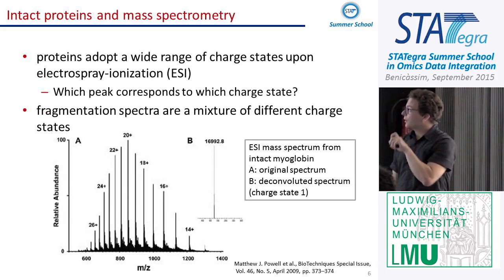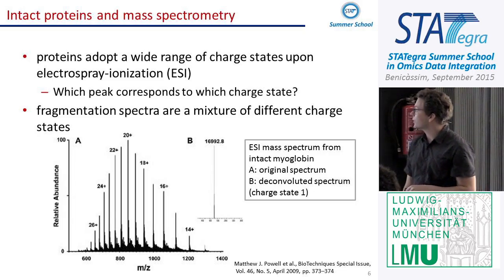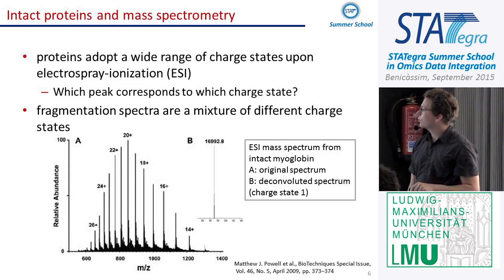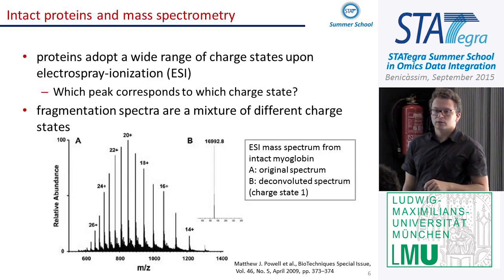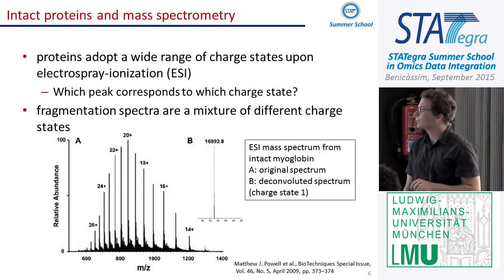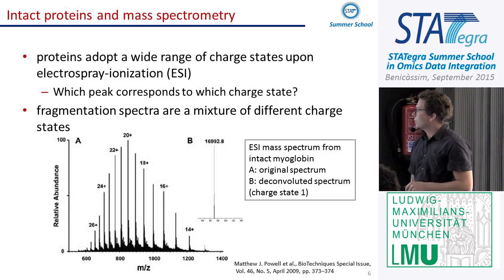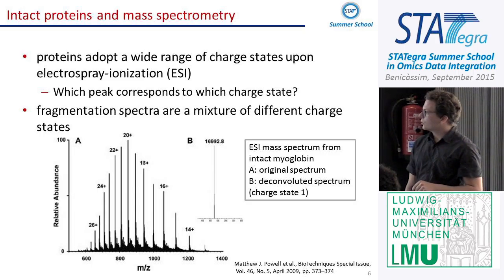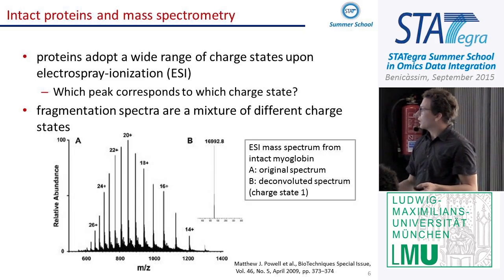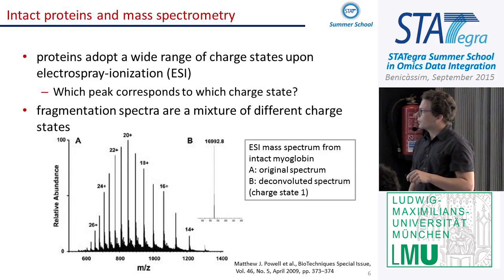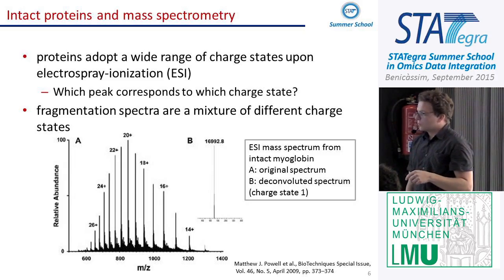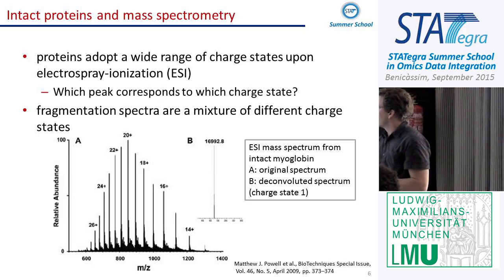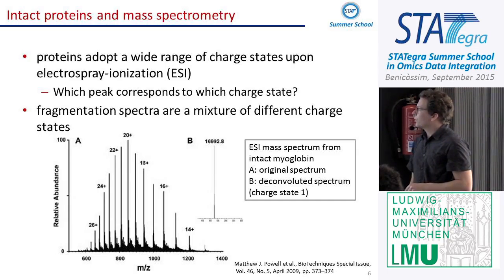If you analyze the full intact protein and manage to measure it in the mass spectrometer, what you often see is a spectrum from electrospray ionization — the most common coupling technique to liquid chromatography. Due to the size of a protein, it acquires different amounts of protons reflected in different charge states. Since mass spectrometers are limited in their acquisition range, a single protein can already occupy about one-third of it. So working with full-length proteins is a bit difficult.